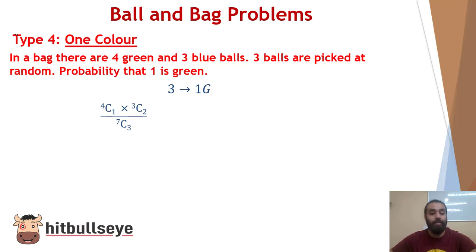if you have previous video tricks, how can we write 4C1 and how can we write 4C2 and how can we write 3C2? So this will get to the answer as 12 upon 35. Type 5.